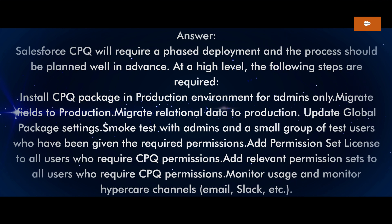At a high level, the following steps are required: Install CPQ package in production environment for admins only. Migrate fields to production. Migrate relational data to production. Update global package settings. Smoke tests with admins and a small group of test users who have been given the required permissions. Add permission set license to all users who require CPQ permissions. Add relevant permission sets to all users who require CPQ permissions. Monitor usage and monitor hypercare channels.